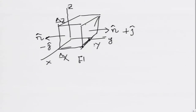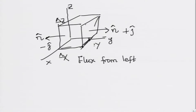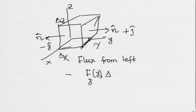The flux of the field from the left face, which has the normal as minus j — since I am considering only opposite points whose x and z values are the same, I only need to look at the y-dependence of the vector field. So the contribution is minus F_y(y) times the surface area delta x times delta z.